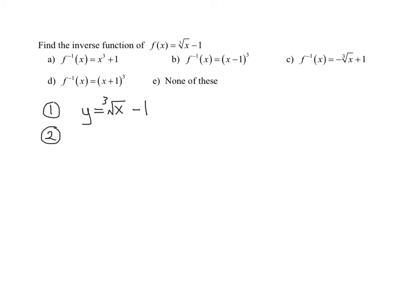Now what we have to do is remember the key to inverses is interchanging x and y. Wherever you see a y you're going to put an x, wherever you see an x you're going to put a y. So I'm going to have x equals the cube root of y minus one.